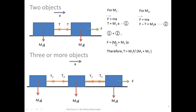Another way to find the acceleration is to apply F equals ma for the whole system. The internal tensions cancel out, and the only net force is F. The total mass is m1 plus m2, so F equals (m1 + m2) times a. You can either eliminate T by adding the individual equations or use the whole-system approach. Once you know F and a, you can substitute to find T.